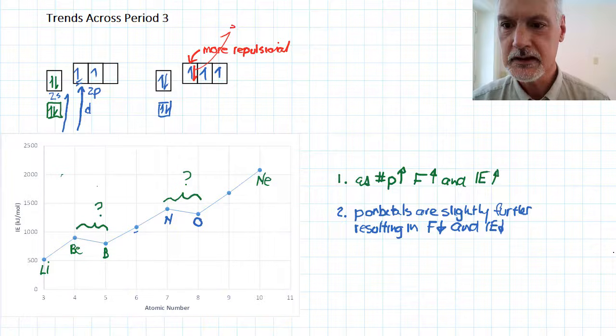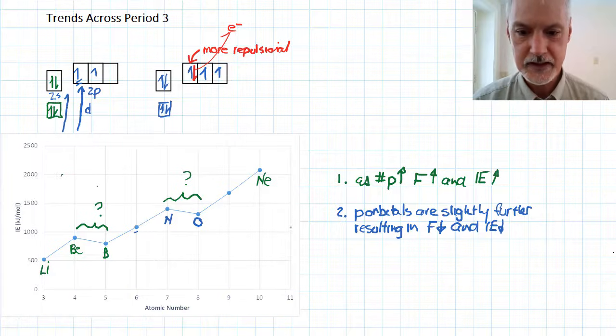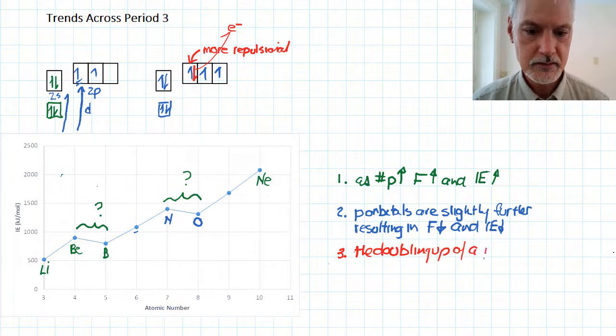That repulsion helps make it easier to remove this red electron. So when I go to remove it through the act of ionization, the repulsion from the neighboring electron is helping push it away. So the doubling up of a p orbital causes repulsion, making it easier to remove the electron.